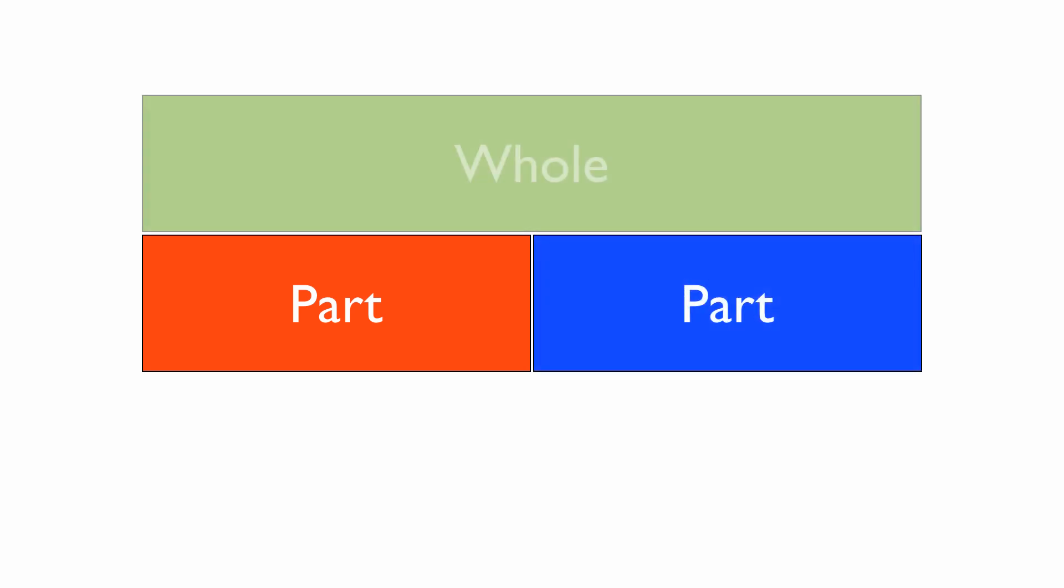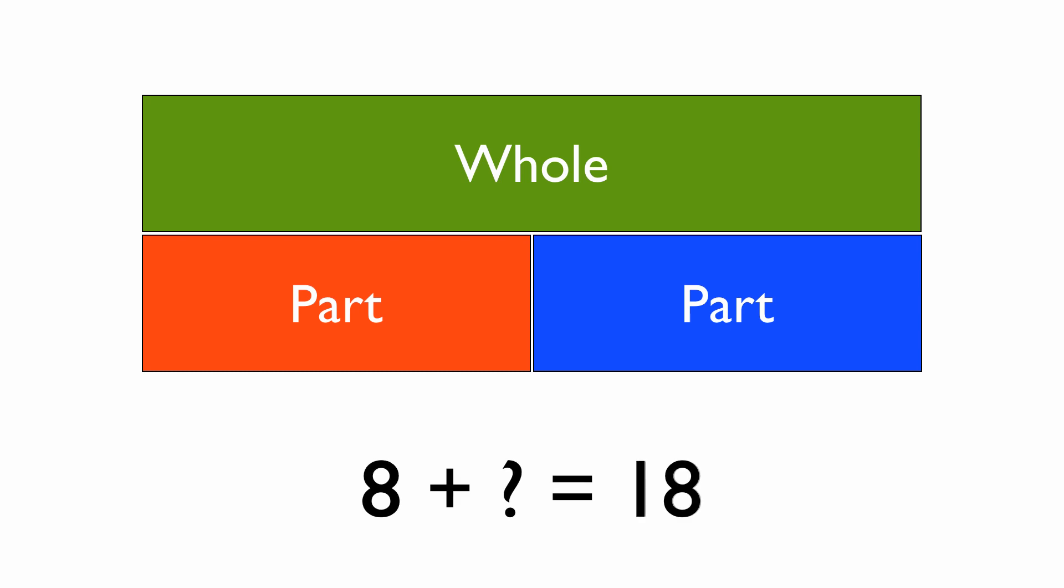We can use this same part-part-whole combination when we don't know the amount that's being added. So in this question it's 8 add something equals 18. Now we know that the whole, the total, is going to be 18. And we know the two parts: 8 and this other part which is the one that we're trying to find.